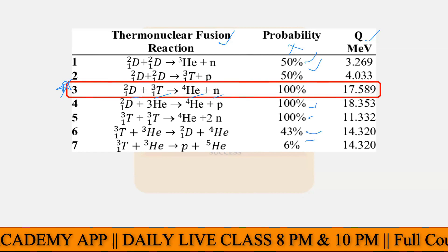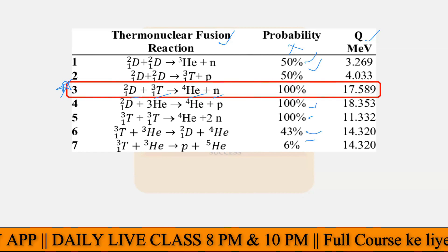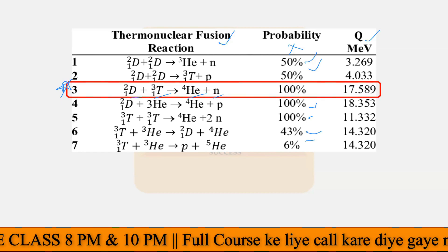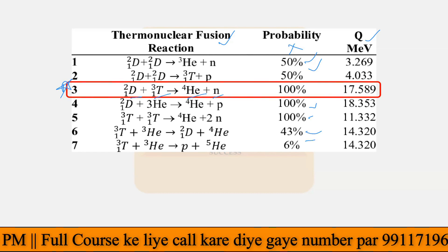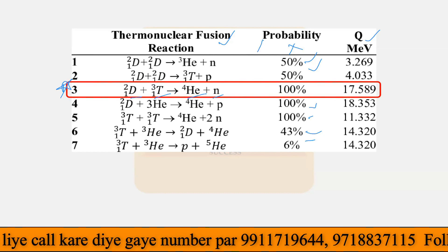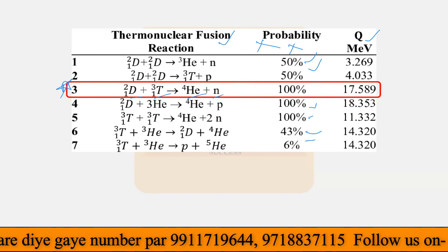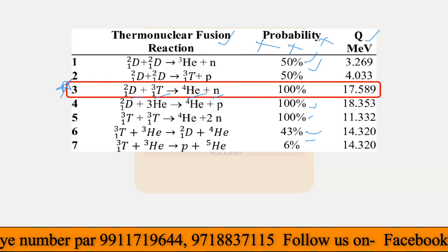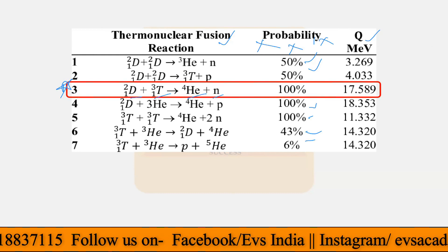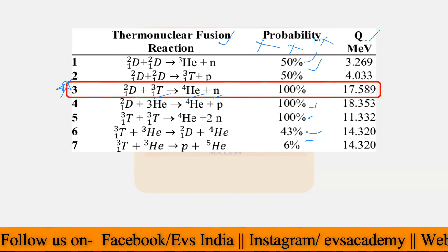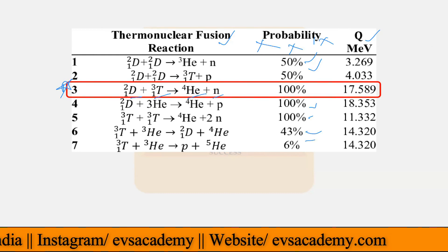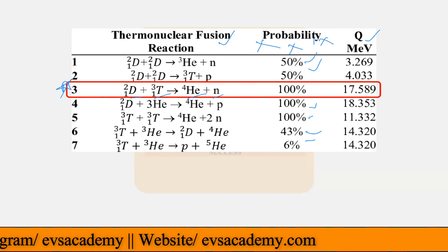This third fusion reaction is the most important. If you can remember the others, that is also good, but do not memorize the probabilities as they generally do not come in the examination. The energy in megaelectron volts and the thermonuclear fusion reactions are what are asked.